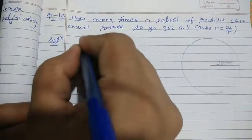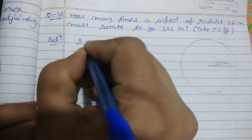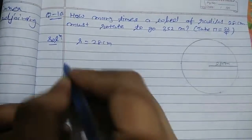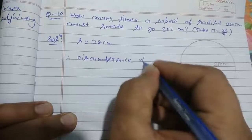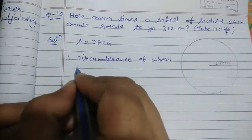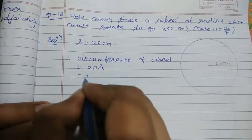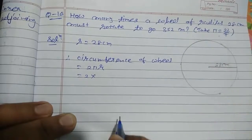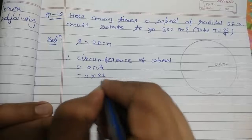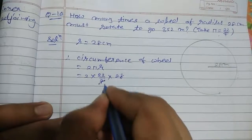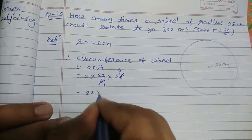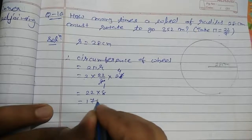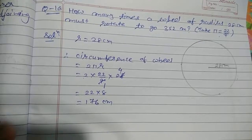Solution: radius = 28 centimeters. Circumference of wheel = 2πr = 2 × (22/7) × 28. Simplifying: 7 cancels with 28 giving 4, so 2 × 22 × 4 = 176 centimeters.